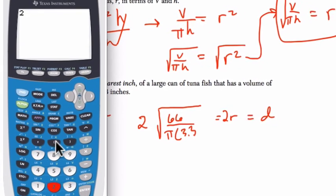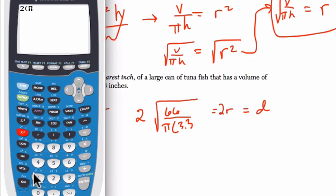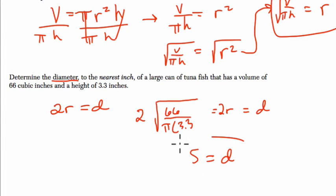So in the calculator we can do this pretty quickly. It's 2, parenthesis, square root of 66 divided by—use parenthesis again—π times 3.3, close parenthesis, and then close them again for the square root and hit enter. And we get 5.046. To the nearest whole number, the nearest inch is just 5. So d is 5. Thanks.